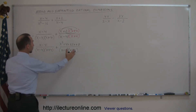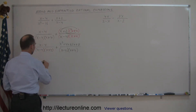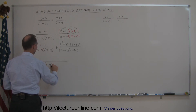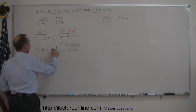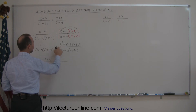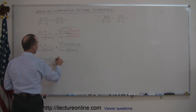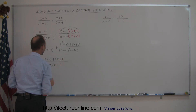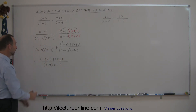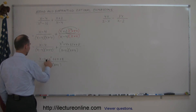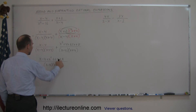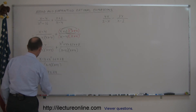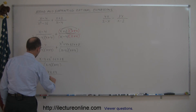Now that we have the same denominators, we can write these two fractions over a single denominator: x minus 4 times x plus 4. Then we add everything up in the numerator: we have x minus 4, plus x squared, plus 4x plus 2x — that's plus 6x — and then plus 8. Adding the like terms, we have x squared, then 6x plus x is plus 7x, and minus 4 plus 8 gives plus 4, all divided by x minus 4 times x plus 4.